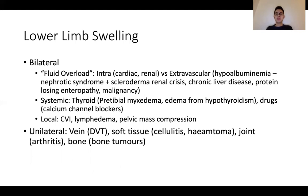For the extravascular group, this is usually driven by hypoalbuminaemia. The big groups to think about: number one, nephrotic syndrome; number two, chronic liver disease; number three, protein-losing enteropathies; number four, malignancy or any chronic disease that can cause albumin to be low in the long run. While scleroderma renal crisis is not strictly a cause of nephrotic syndrome per se, these patients do lose protein fairly significantly and can present with lower limb swelling — so that's an important cause to bear in mind.